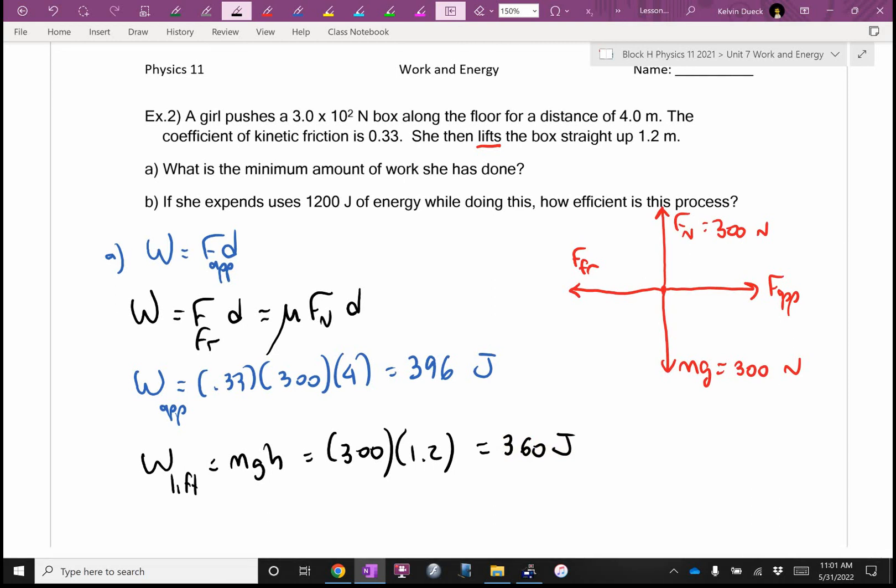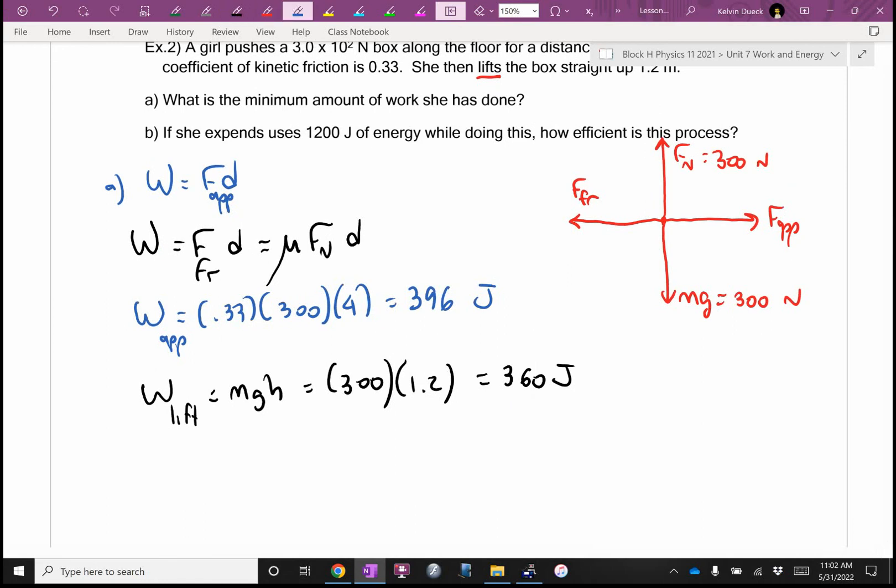So, she did 396 joules pushing this across the floor, 360 joules of work lifting it up. What did this question want me to find? A. We're still doing A. I guess the total work is going to be 396 plus 360. Which is 756 Joules. That's how much work she did on the box. But it turns out her body burned more energy than 756 joules. How much energy did her body use, according to Part B? 1200 Joules.